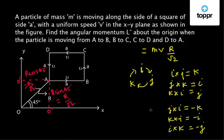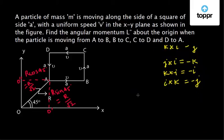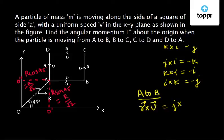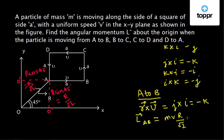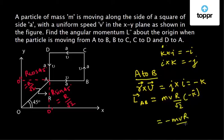For path A to B, we calculate the direction of r × v. The position vector r is in the positive y direction (j), and the velocity is in the positive x direction (i). Since j×i = −k, the angular momentum vector L(A→B) = mv·(r/√2)·(−k) = −mv·(r/√2)·k̂.